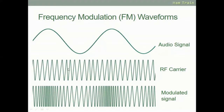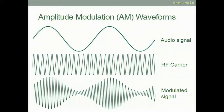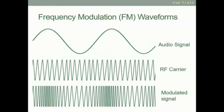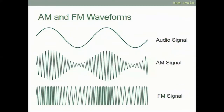That's the difference between amplitude modulation and frequency modulation. As we can see here, with the high peaks you have a higher amplitude and a higher frequency than you do in the low troughs.